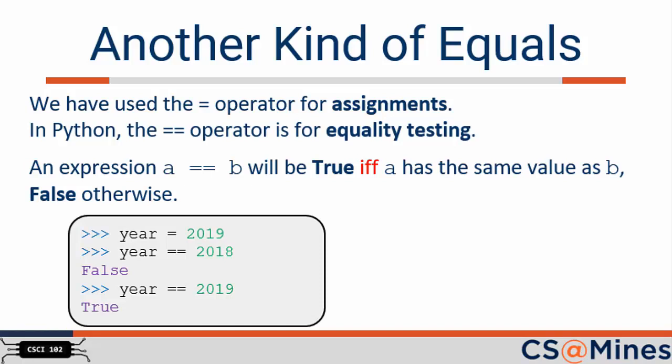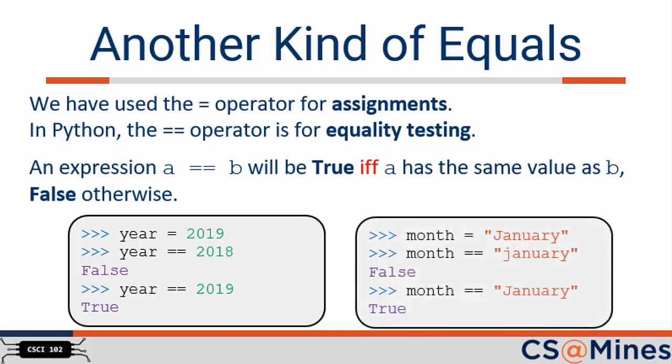Let's look at some more examples. In this first box, year equals 2019 will assign the integer 2019 to the variable year. Year double equals 2018 will test if the value stored in year has the same value as 2018, which will evaluate to false. On the other hand, year double equals 2019 will evaluate to true. In the second box, the string January is assigned to the variable month. The following two equality tests illustrate that Python is case sensitive — January with a lowercase j evaluates to false, and January with an uppercase J evaluates to true.